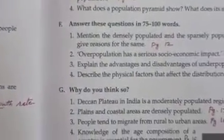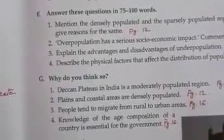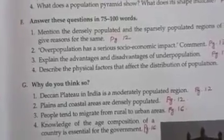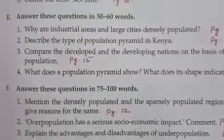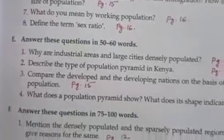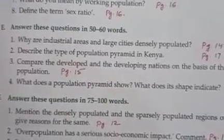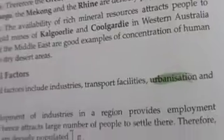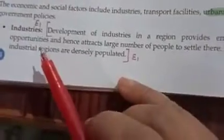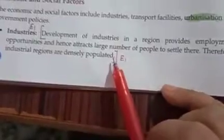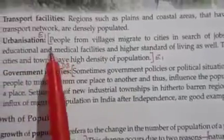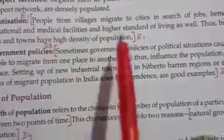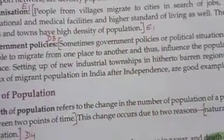Question number E — answer these questions in 50 to 60 words. First question: why are industrial areas and large cities densely populated? Its answer is on pages 14 and 15. The last point of page 14 gives the first part. Then on the next page, under 'Urbanization,' the second part is given — the full paragraph and full point you need to write.